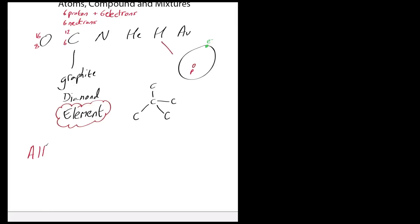Mixtures are basically non-bonded compounds all mixed up together. If we take air — the air that we breathe — it is made up of oxygen. Oxygen in its elemental form is actually written as O₂, with a double bond between the two oxygen atoms. So it's actually not a single atom; it's a compound made up of the same type of atom, and that can be regarded as the elemental form of oxygen.